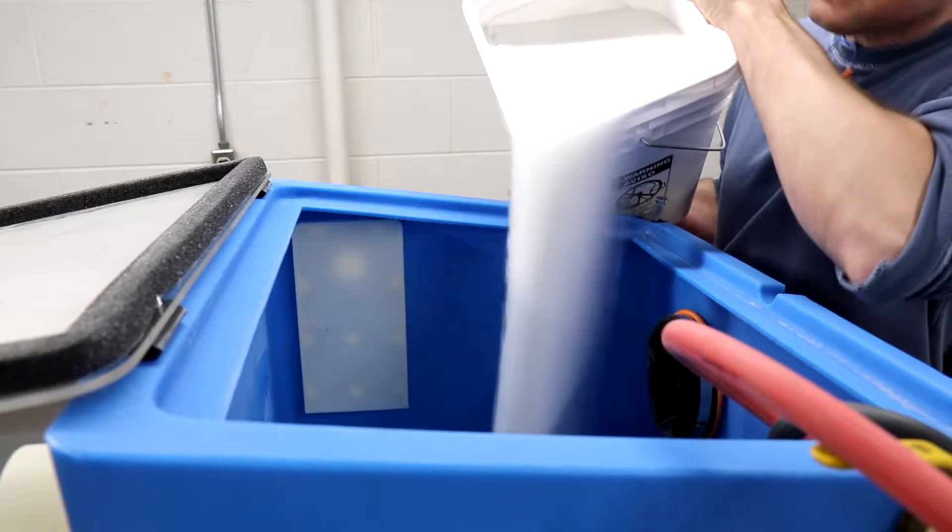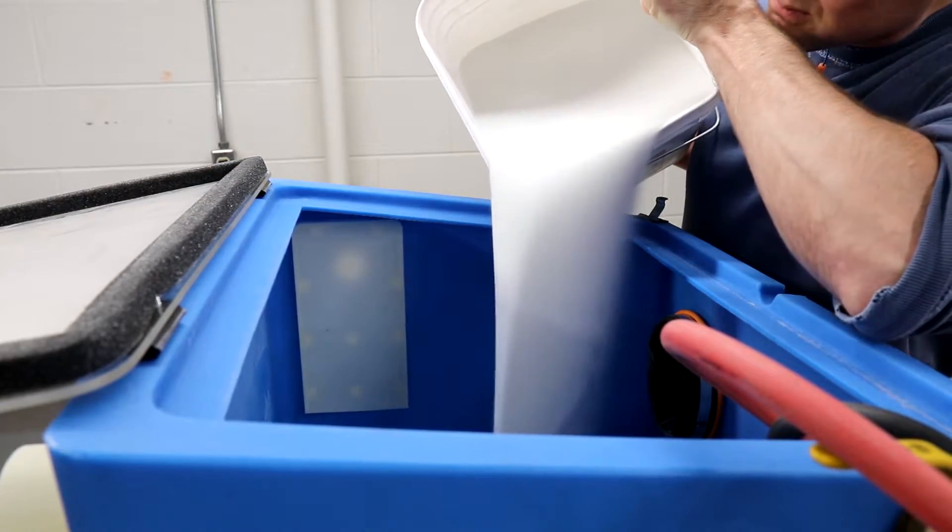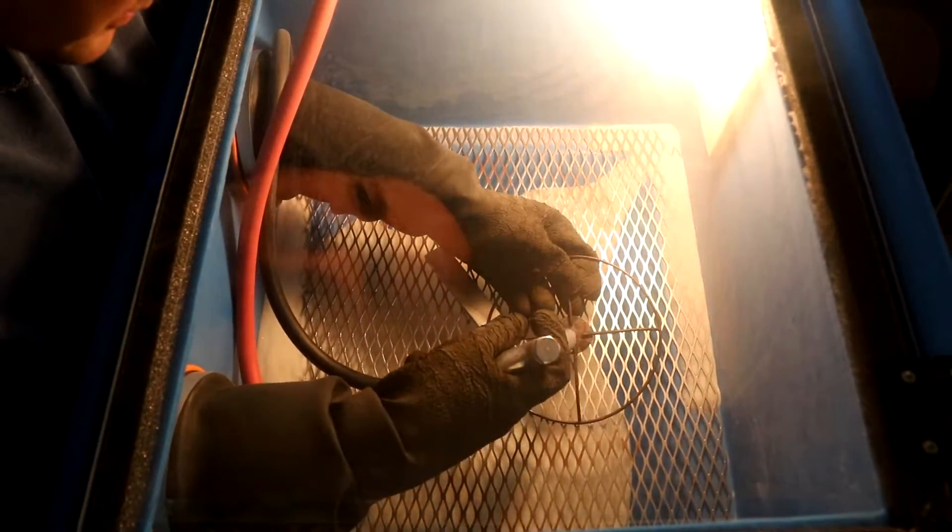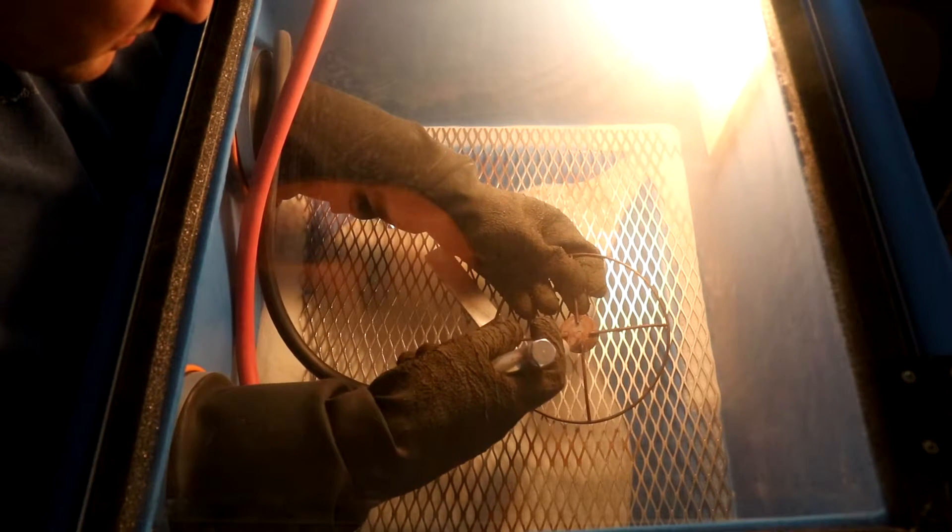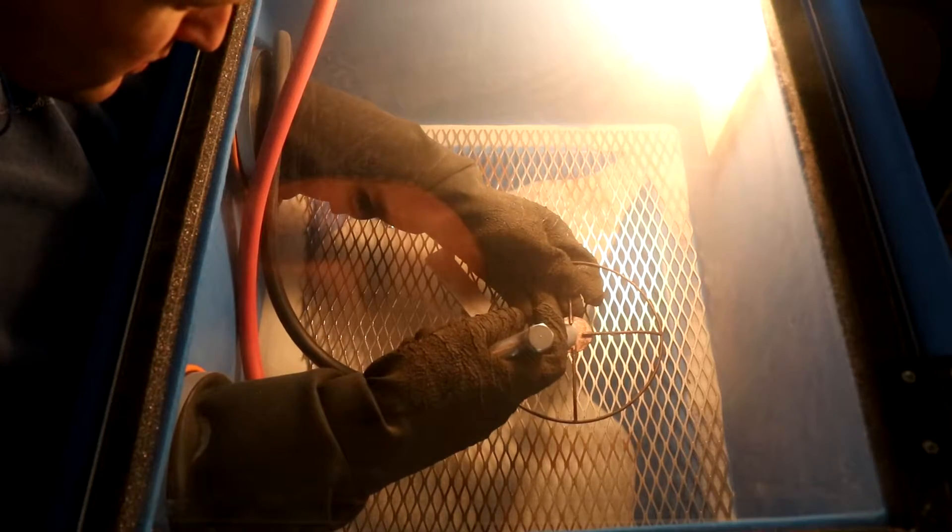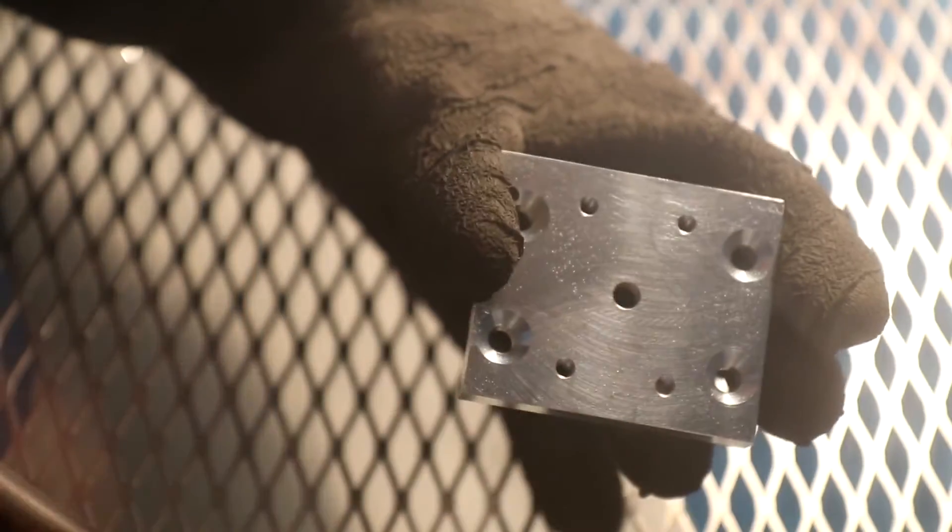These are 60 to 120 mesh glass beads. The pail is 50 pounds, and I put roughly a third of the pail into the blaster. The nice thing about glass beads is that they remove crud off the surface without affecting the surface much. This is the base of a hummingbird feeder, and I think it's made of copper.